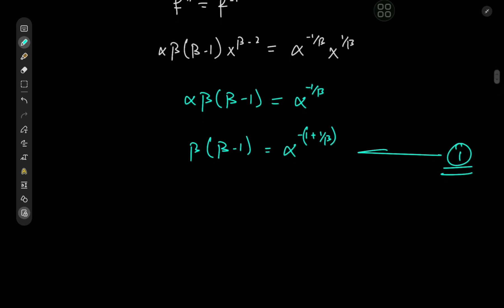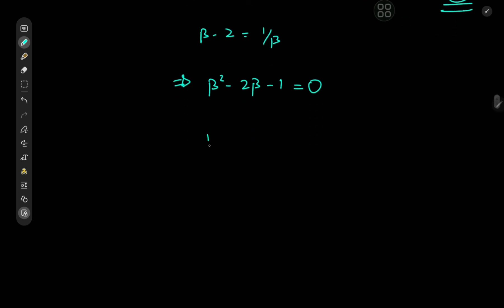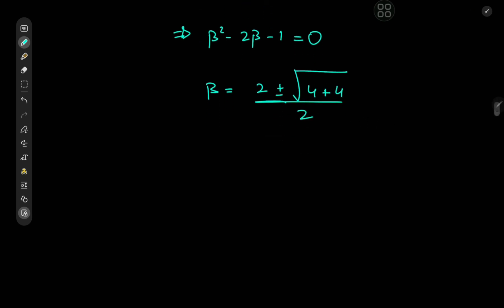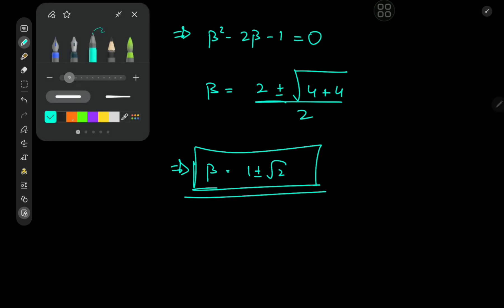For the exponents we have beta minus 2 equal to 1 over beta. Expanding by multiplying through by beta gives beta squared minus 2 beta equal to 1, or beta squared minus 2 beta minus 1 equal to 0. Solving with the quadratic formula gives beta equal to 2 plus or minus the square root of 4 plus 4, all over 2. Since root 8 equals 2 root 2, we get beta equal to 1 plus or minus root 2. So we have two possible values of beta, hence two possible values of alpha.